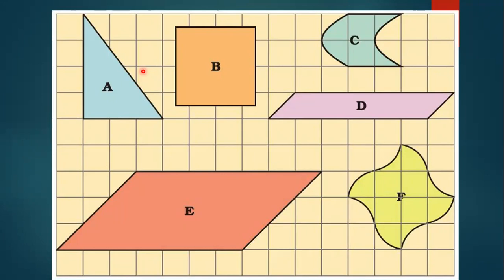Here you can see many shapes and we have to find out the area of these shapes. They are shown on a squared surface. To find out the area, you will count the number of squares. These figures are not in the shape of a rectangle or square, and many of the figures are not covering the complete square — many squares are half or quarterly covered.